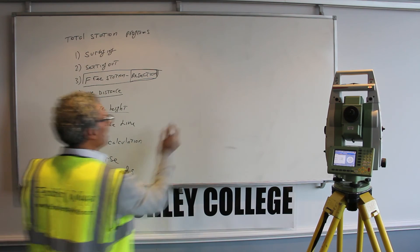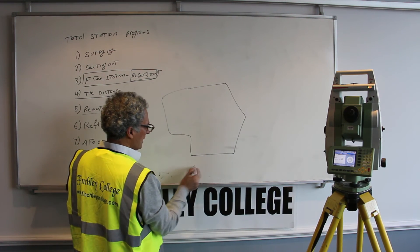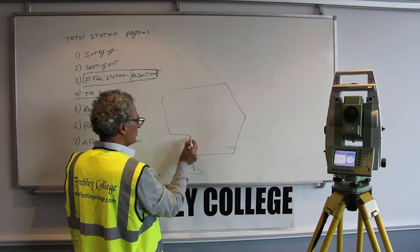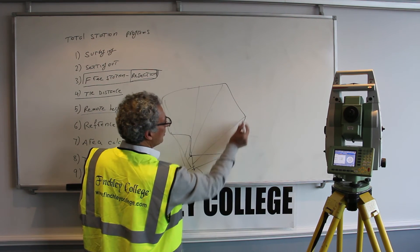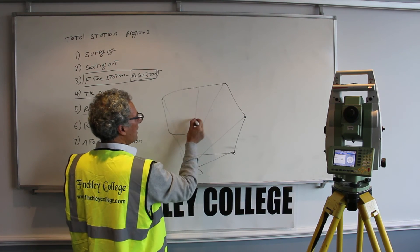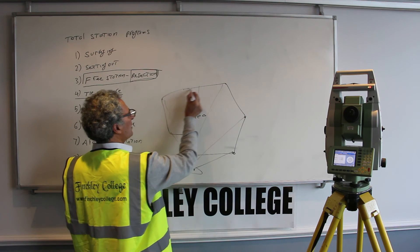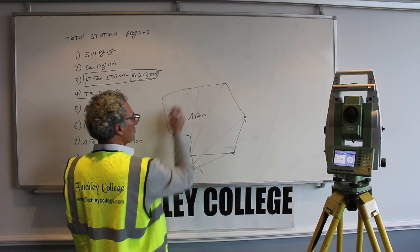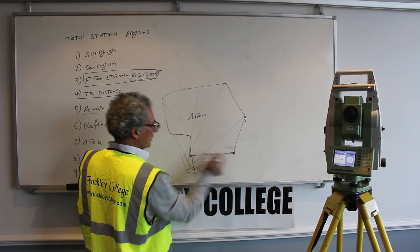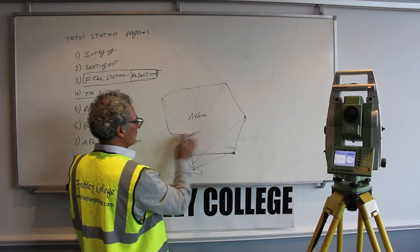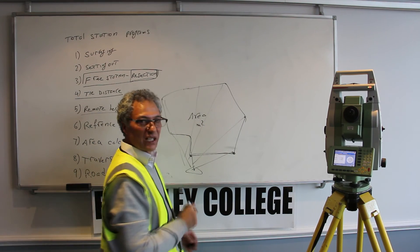The next program is area calculation. You can measure the area of a regular shape — set up your instrument anywhere, sight to various corner points, and as you sight, the instrument calculates the coordinates for each and tells you the area within those points. You need to start from one point and go clockwise or anti-clockwise in order around the shape. You don't need to finish back at the first point; it will automatically close the polygon, and it will show you the area in metres squared and also in hectares.